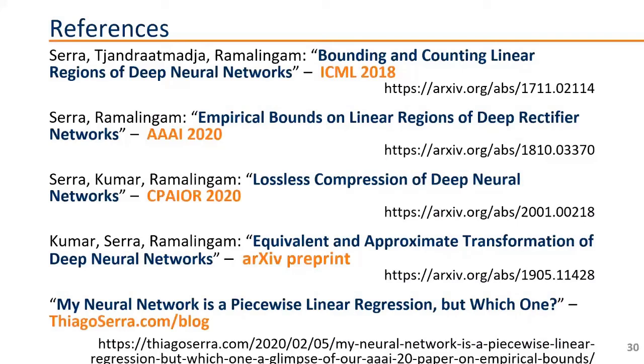And you can see that the run times are getting larger and larger. And that's one of the things that we want to explore in future work, which is how we can solve these problems faster so that we can scale this method to larger neural networks. So that's what I had to say about this work. This fits in a bigger scheme of research that I've been doing with Shiri Kumar Ramaligan, Abhinav Kumar, Krishan Tijad Madraja. So you can see some previous work that we did at ICML and AAAI. This paper at CPIOR, we have another preprint on archive and a blog post where you can see a little bit more about this correspondence between neural networks and piecewise linear regressions. Thank you very much for your time.